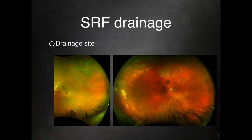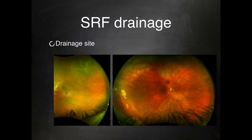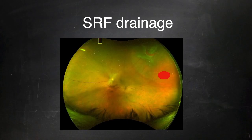When selecting the drainage site, you want to be at the most dependent part of the retina as much as possible. Another thing to consider is that the choroidal vasculature is dense near the vertical recti — the vortex veins are there — so you want to be more towards the horizontal recti.